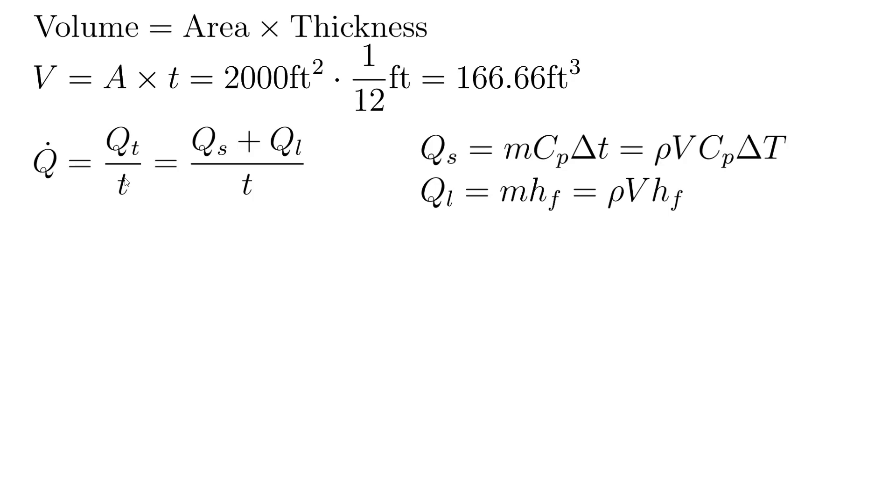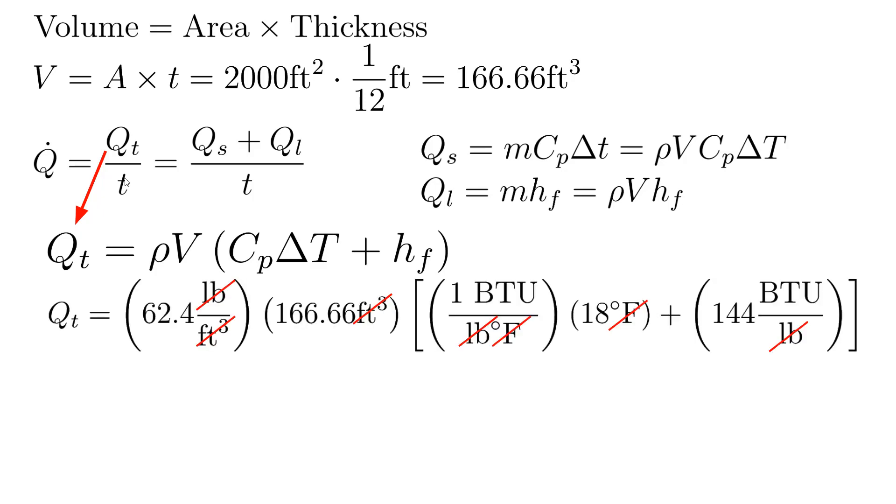So let's add those two together to get the total heat that needs to be removed, the sum of the latent and the sensible. That's Q sub T, Q total. We can factor out the density times volume, and then we're ready to substitute in for each of those. So again, the density is 62.4 pounds per cubic foot. The volume we know, the specific heat capacity of water is one in US customary units. The delta T is 18. And the latent heat of fusion for water is 144 BTUs per pound in US customary units.